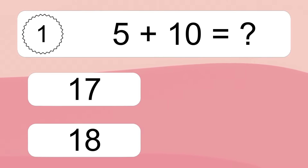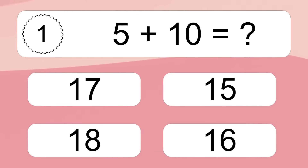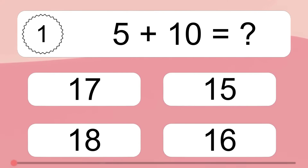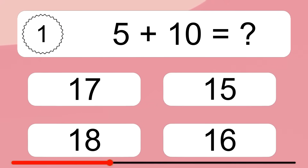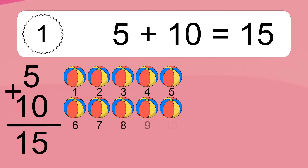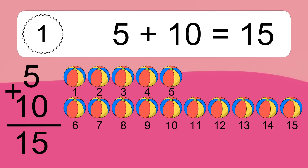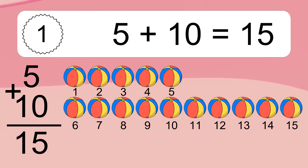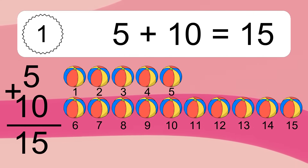5 plus 10 equals what? 5 plus 10 equals 15. Let's count it: 1, 2, 3, 4, 5, 6, 7, 8, 9, 10, 11, 12, 13, 14, 15.